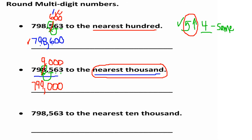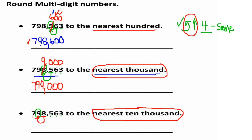Now let's round 798,563 to the nearest ten thousand. Which digit is in the ten thousands place? We have ones, tens, hundreds, thousands, ten thousands — so we circle that digit, which is 9. We use the digit in the smaller value right next to the ten thousands, which is the thousands place, to determine whether we round up. If it's 5 or more, round up; if less than 5, it stays the same.